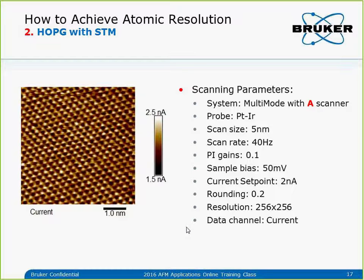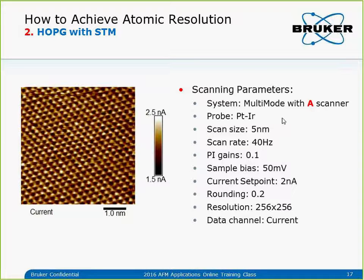Next example is HOPG with STM — I'll briefly cover this. I imaged it with multimode using the A-scanner, which has a much smaller scan range and is designed for this kind of atomic imaging. You can see a very well-defined lattice image with STM. The probe I used is just a platinum-iridium wire cut with scissors. Scan size is about 5 nanometers. Similar to contact mode, I use a very high scan rate — like 40 Hz — and look at the current instead of height. I use very low feedback gain to just track surface slope and drift.